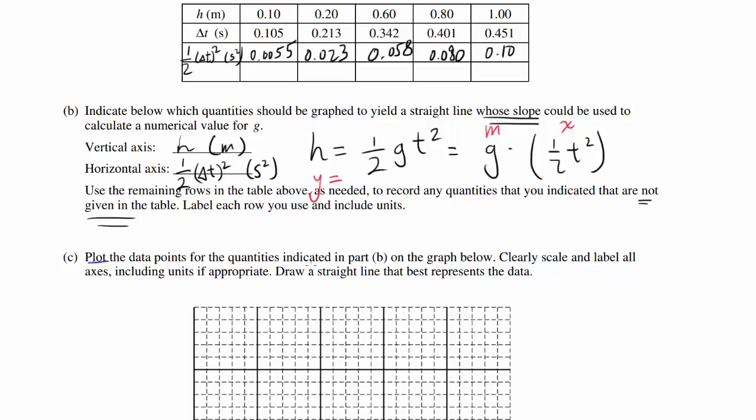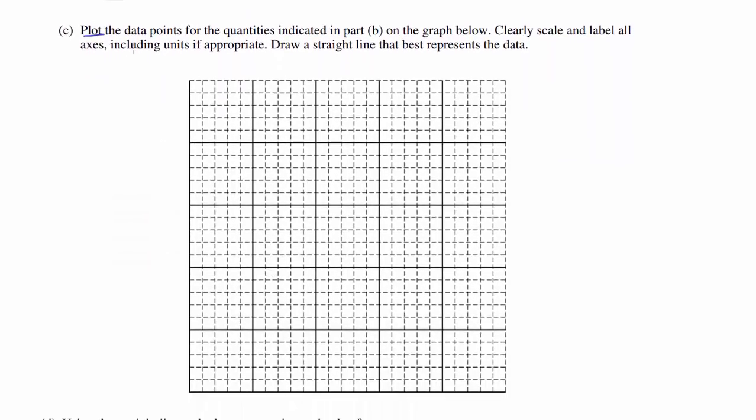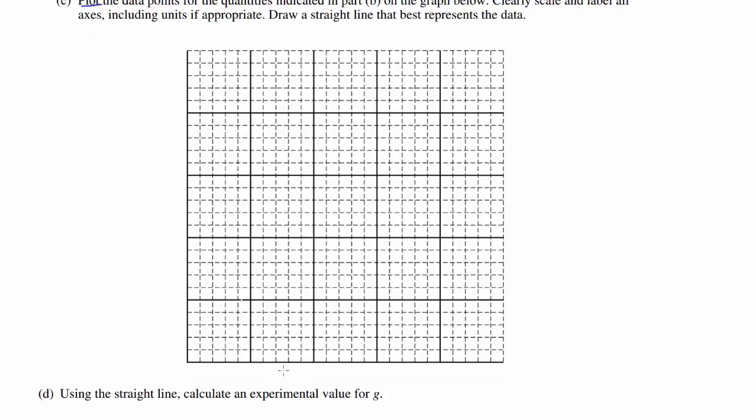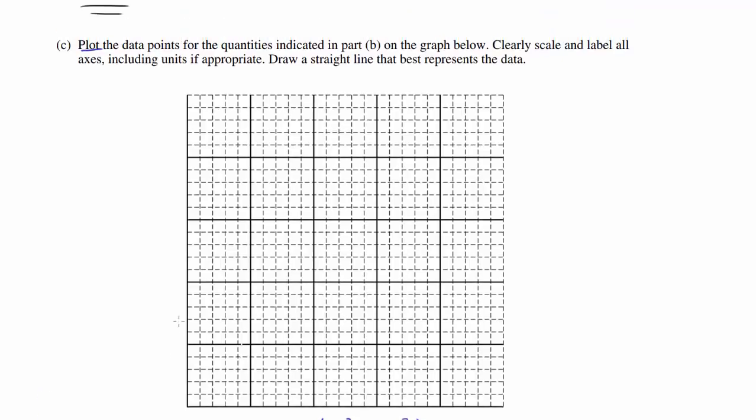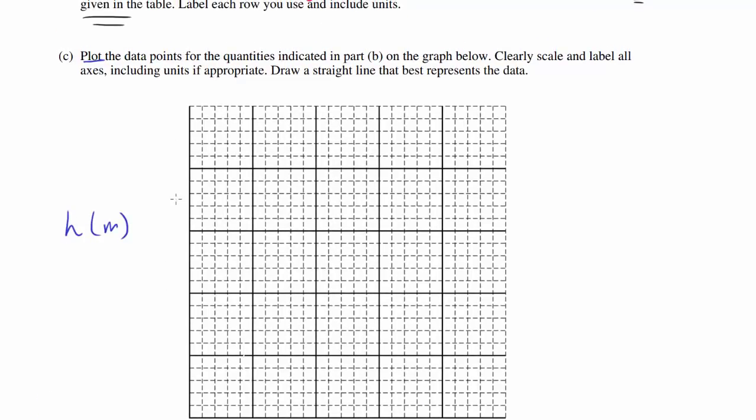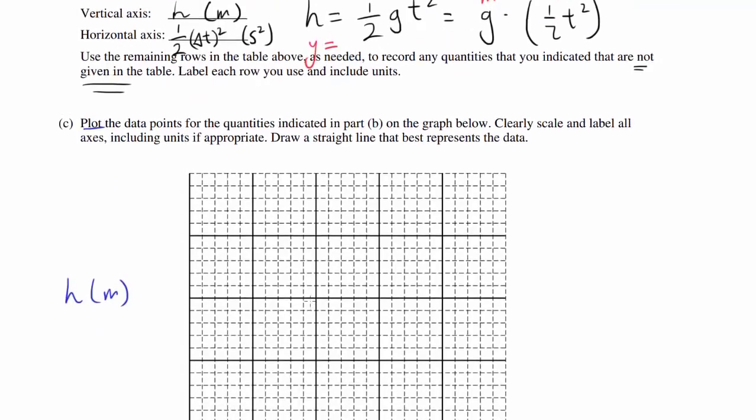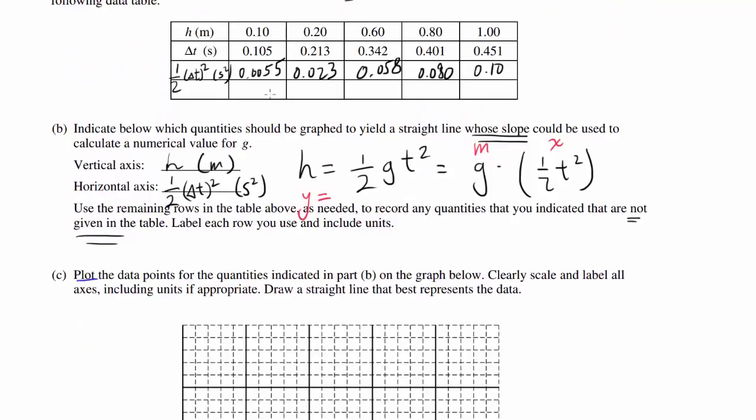Part C: Plot the data points for the quantities indicated in part B on the graph. We have 1/2 t squared in seconds squared for the horizontal axis and height in meters for the vertical axis. Before we plot points, let's make sure we label and scale all the axes so that all of our data points are going to fit and we use the majority of the graph.